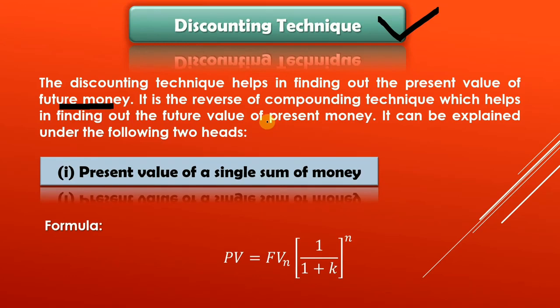The money you are going to receive in the future — you want to know its value at today's time. That is called present value of future money. To find this, we use the discounting technique. It also comprises two heads; the first is the present value of a single sum of money, meaning we are receiving the money one time only.